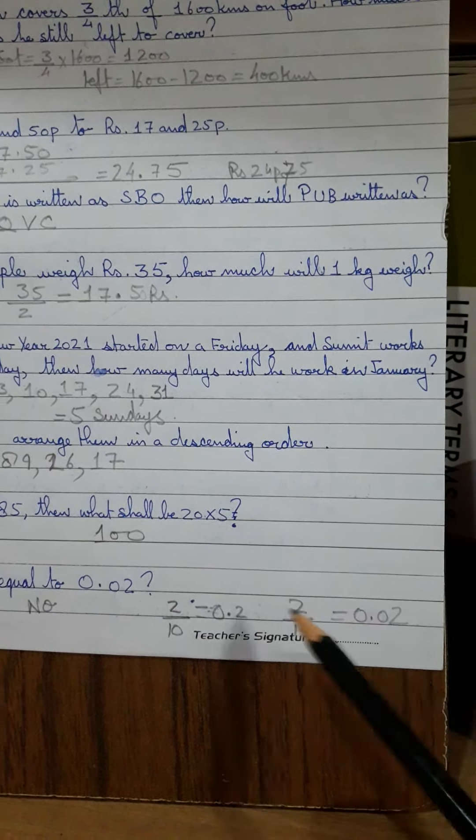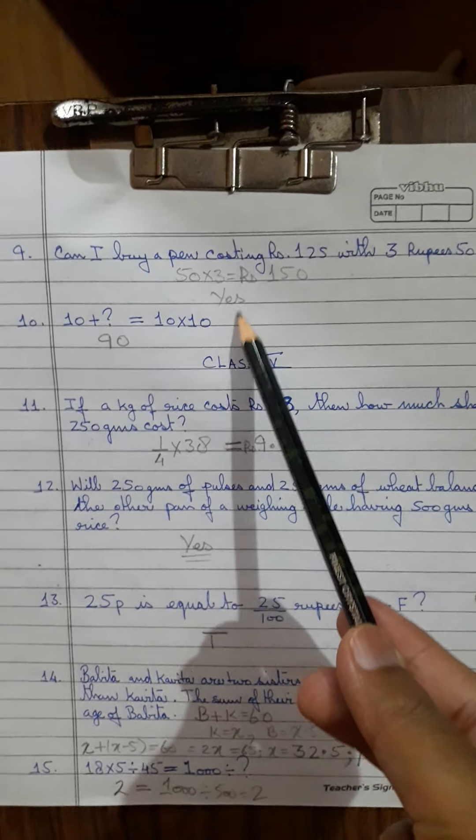So, buy a pen costing rupees 125 with 3 50-rupees notes. Yes, of course, 50 plus 50 plus 50, 50 into 3 is 150 rupees I have. So I will anyways be left over with 25 rupees now. So yes.